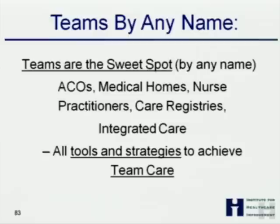Chronic care is a team sport, and we can't fix chronic care or cut costs without teams. Teams are coming — people are calling them ACOs, medical homes, nurse practitioners, care registries, integrated care. Those are all just different names for teams. If you think in functional terms, the functionality we're trying to create is teams. If you think of ACOs as magical — just call a bunch of people an ACO and they will somehow do magical things — it will fail utterly and completely and be a waste of money.